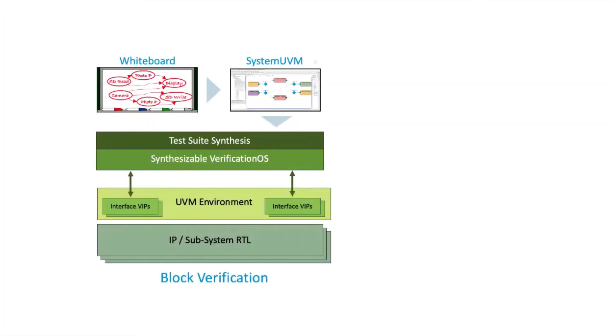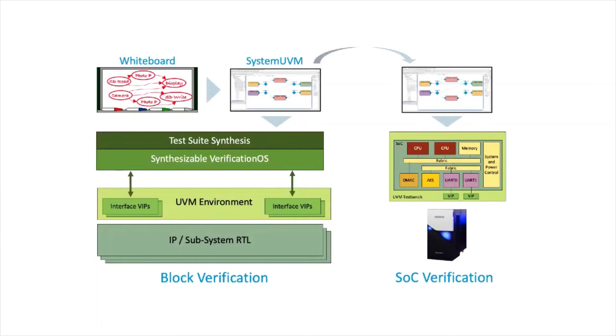Pre-execution randomization produces optimized test content easily layered into UVM test benches for simulation or emulation, as well as reused in full system verification. System UVM empowers verification engineers to easily compose and execute reusable tests up to five times faster with near-perfect coverage to find the toughest bugs.